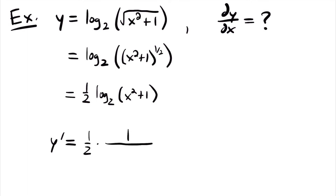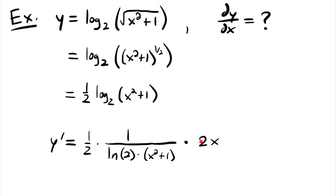We still use the chain rule version of the derivative of the log function. We have 1 divided by the natural log of the base 2, times whatever is inside the log function — so we multiply by x squared plus 1 — and then multiply by the derivative of that inside function. The derivative of x squared is 2x using the power rule, and the derivative of 1 is 0. We can simplify by noting the 2 in the numerator and the one-half cancel out, so y prime is equal to x divided by the natural log of 2 times x squared plus 1.